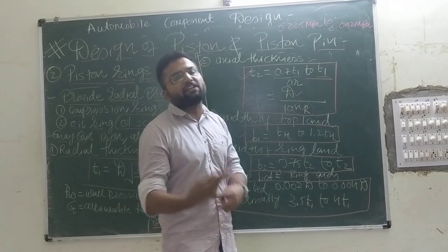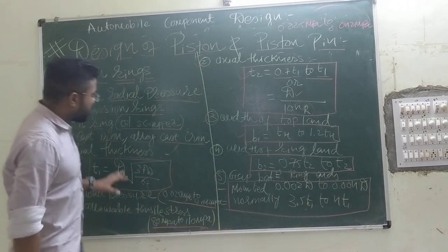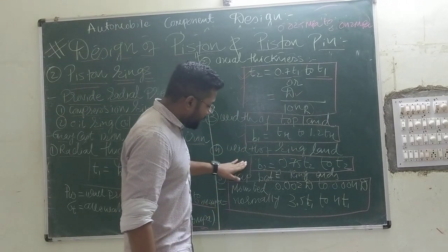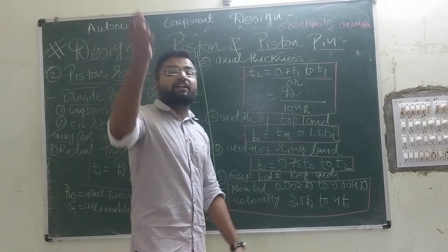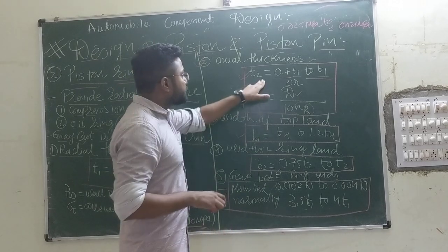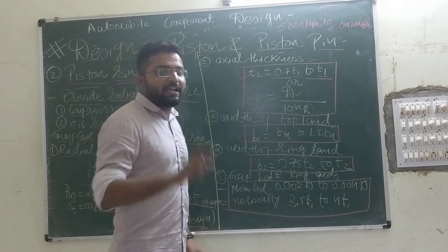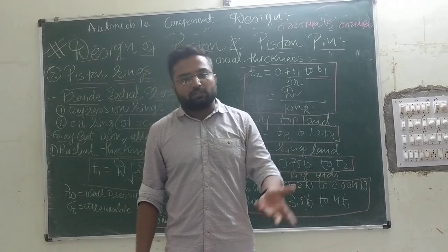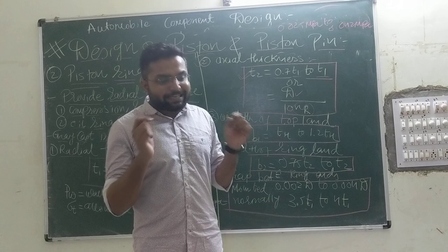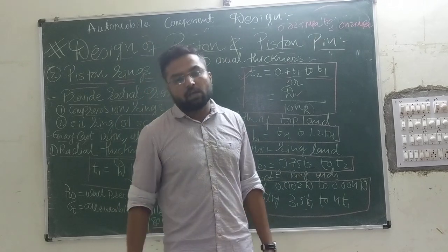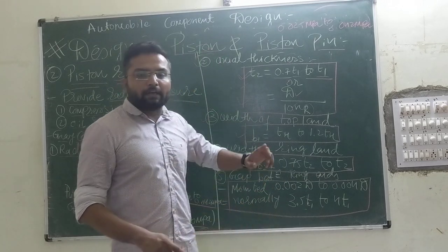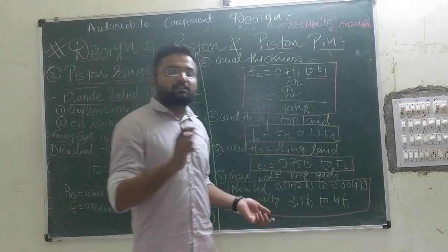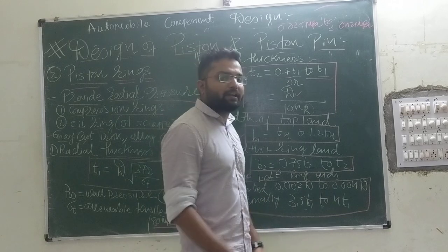There are two sets of features: ring features such as radial and axial thickness, and piston features such as B1, B2, and the gap. These are related to the piston groove machining. The ring is designed in isolation separately, and the ring groove machining is provided in the piston separately.